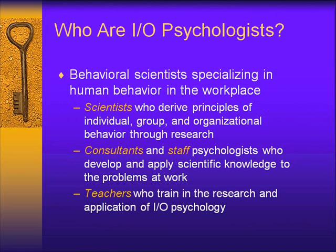Who are these people? Where might you run across an IO psychologist? Some of you may never deal with an IO psychologist — that's fine, it doesn't mean your life is empty. These people are behavioral scientists specializing in human behavior in the workplace. Practically speaking, you might find somebody who talks about these particular topics from one of these roles. Scientists — those are people who come up with principles of individual, group, and organizational behavior through research.